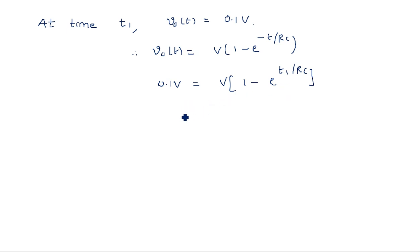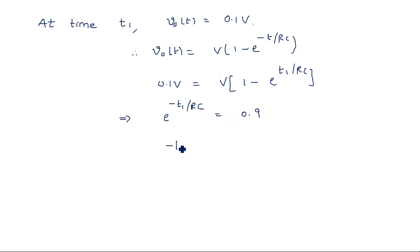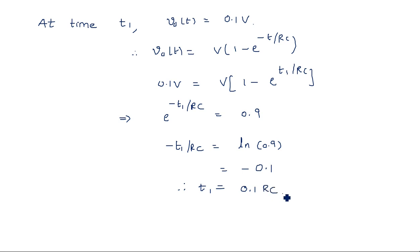Let us calculate T1 from this. The V cancels, giving 1 − e^(−T1/RC) = 0.1. Taking e^(−T1/RC) to the left and 0.1 to the right gives e^(−T1/RC) = 0.9. So −T1/RC = ln(0.9), which is approximately −0.1. Therefore, with the negatives cancelling, T1 = 0.1 × RC.